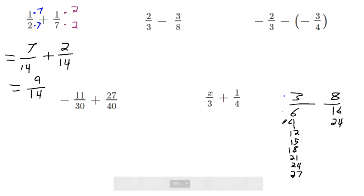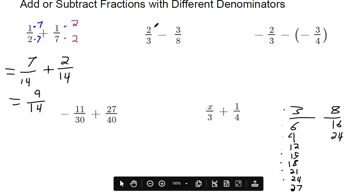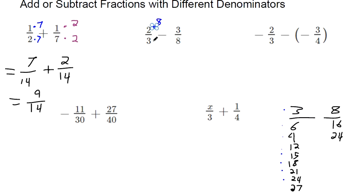3 times 8 makes 24. That will help us get something in common. So that means we've got to multiply the top and the bottom here by 8, and multiply the top and the bottom over here by 3. 2 times 8 makes 16, 3 times 8 makes 24. 3 times 3 makes 9, 3 times 8 makes 24, just like we wanted.